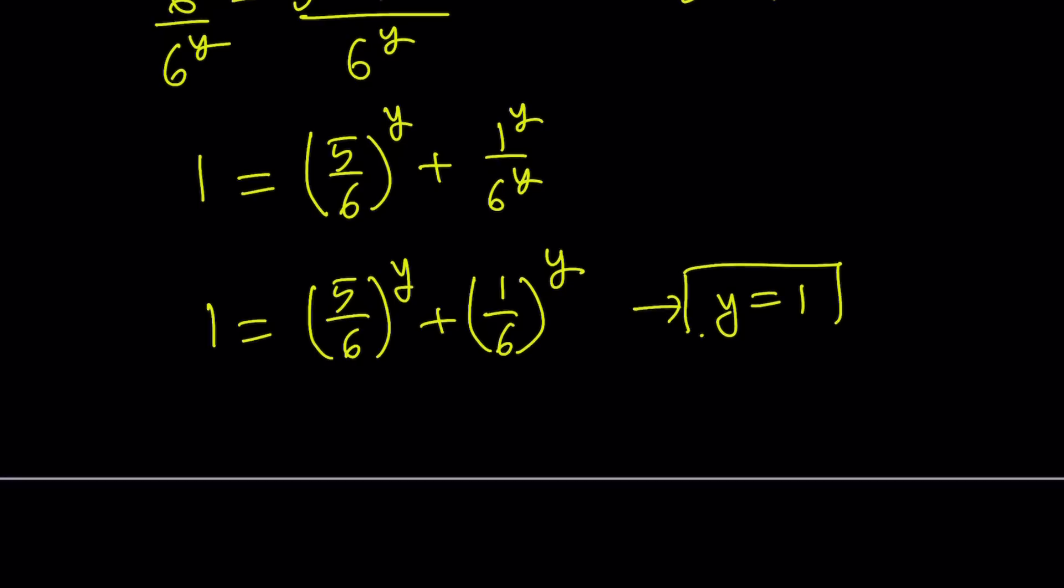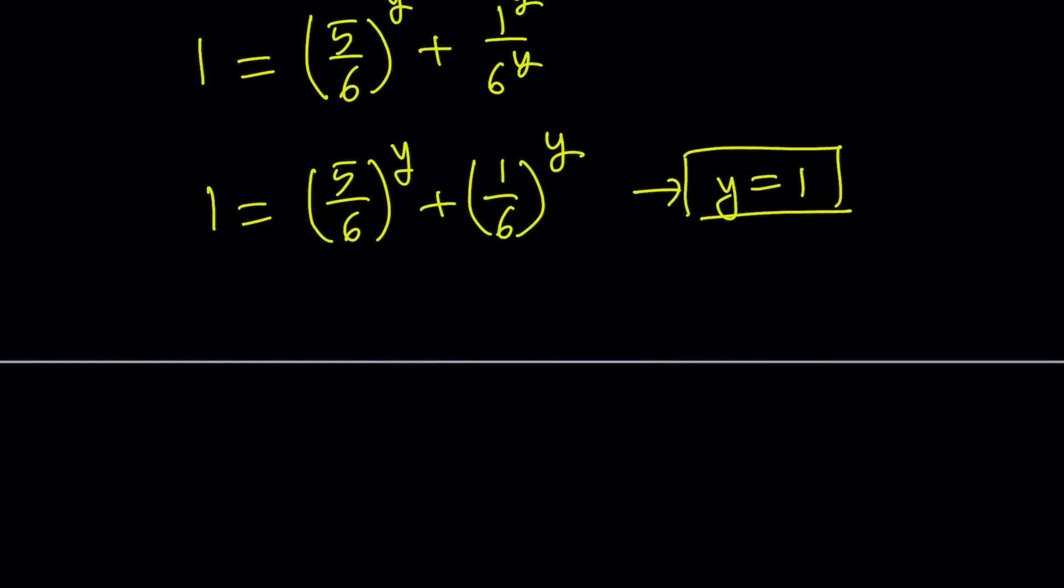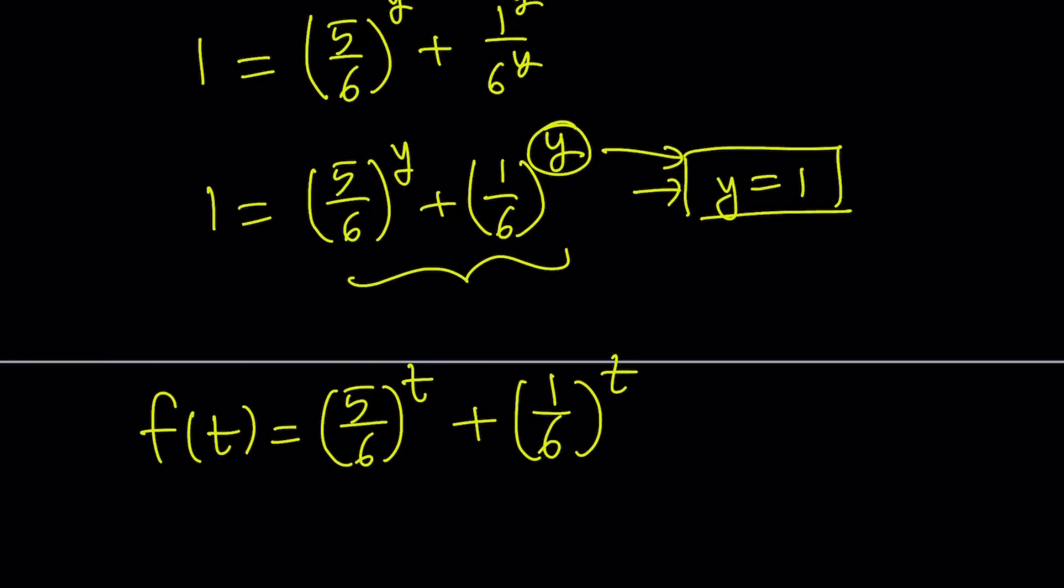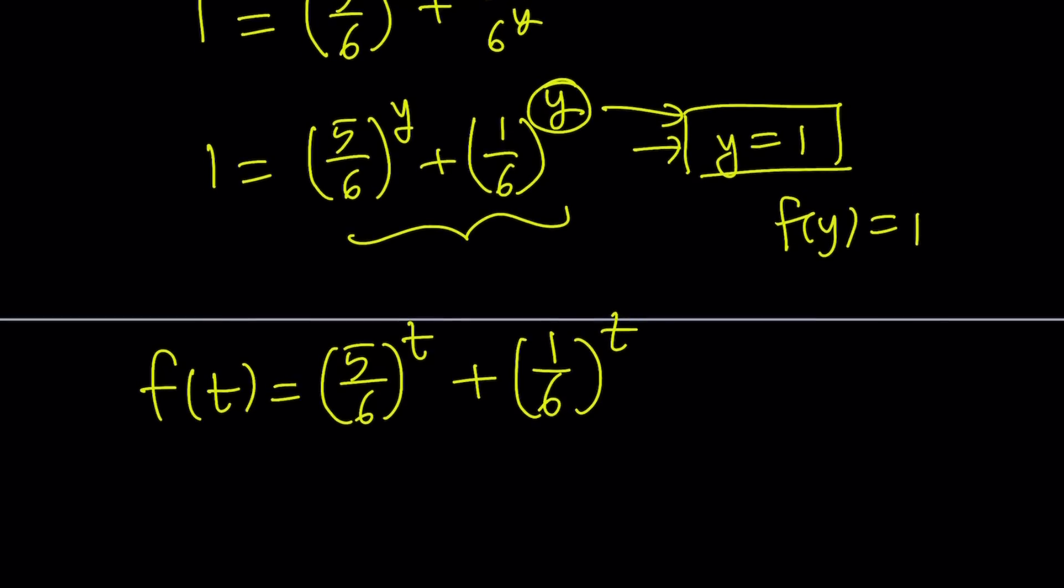But what else do we have? We want to look at it from another perspective. Why is there only one solution? Or is there only one solution? Suppose we have the following function: f of t equals 5 over 6 to the power t plus 1 over 6 to the power t. And why am I using t here? Because I want the y to be a constant value. In this case, y equals 1. And I want to define my function in the general case. So f of y is what I get from here. So f of y equals 1. What do you see on the right-hand side? This is an exponential function with a base less than 1. It's positive, but less than 1. By the way, you don't want the base to be negative. That's problematic.